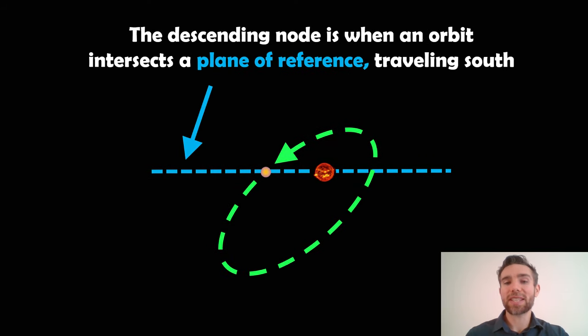Now the descending node is where the orbit intersects the plane of reference but it's traveling south. So this is the one given here. So it's actually going through the plane of reference and it's going down in a south motion.